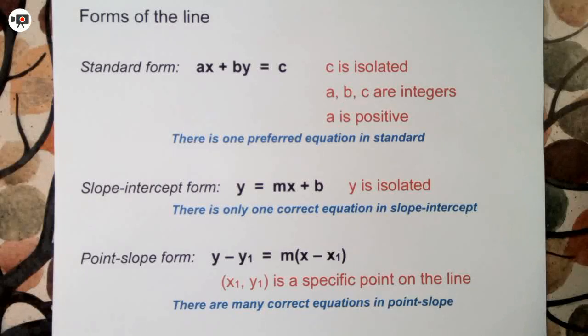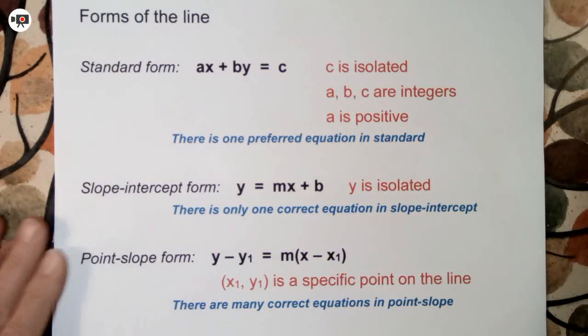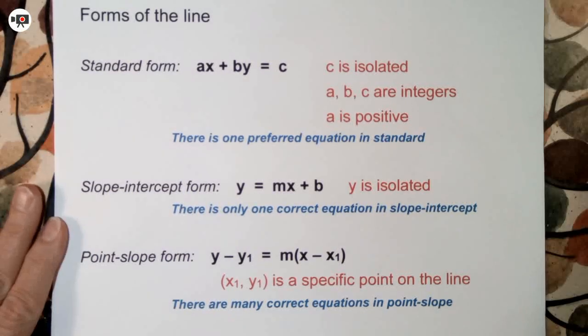In the best practice, A, B, and C are all integers. It just makes it useful. And A is positive. Now, all mathematicians don't say A has to be positive, but it doesn't hurt if it is, and there are many circumstances when it's easier to use if it is positive. So I'd like for you all, at least at this point, to make A positive as well.